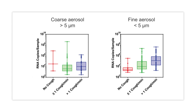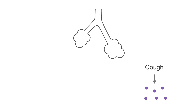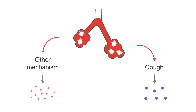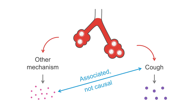So what this means is that a person produces particles with high viral load not when they cough, but actually during times when they don't cough. These observations suggest that cough is at least in part an epiphenomenon — more of a response to irritation associated with high viral loads in distal airways — than a direct source of infectious aerosol. So cough and fine virus-laden aerosol particles are associated, but not causally so.